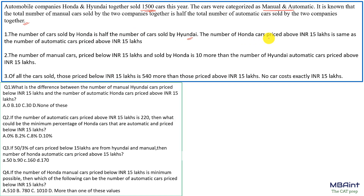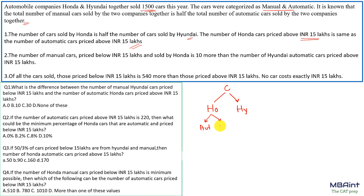The number of Honda cars priced above 15 lakhs is the same as the number of automatic cars priced below 15 lakhs. Each car can either be Honda or Hyundai, and for each company's cars there are two possible transmission types: automatic or manual.